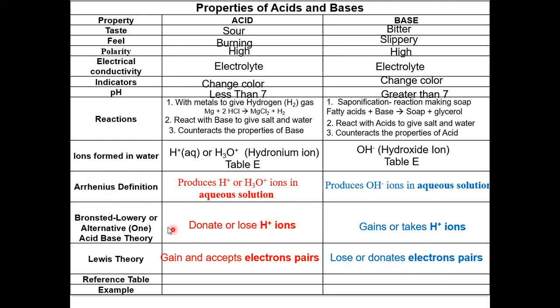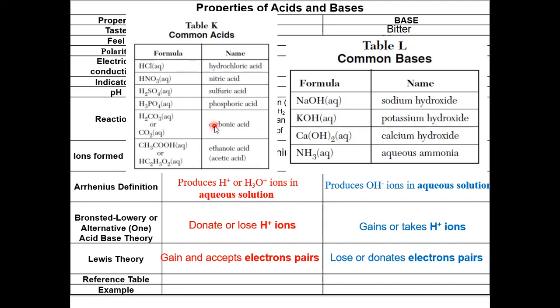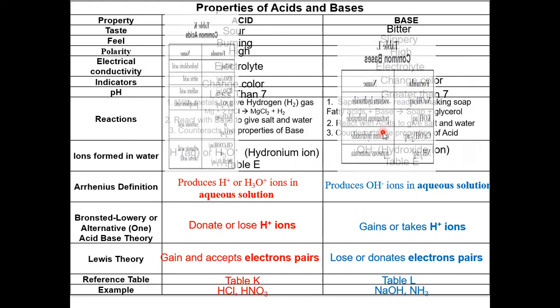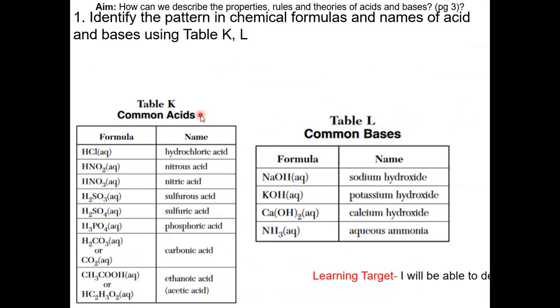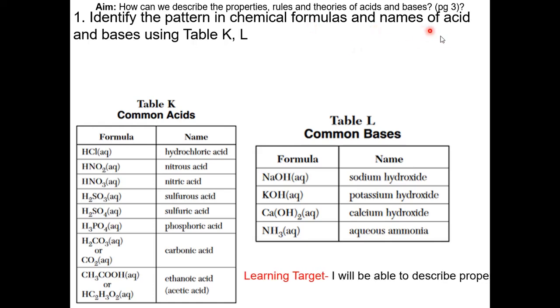Keep in mind, each of these theories tries to explain what is an acid or a base. There is no contradiction or conflict between the theories — they support one another. A list of acids can be found on Table K in your reference table, and a list of bases can be found on Table L. Here is the completed table of the properties of acids and bases — use it to study for the exam and for the Regents. Using Table K and Table L, identify the pattern in chemical formulas and the names of acids and bases.